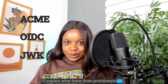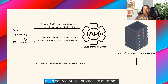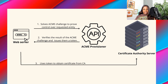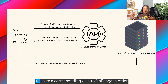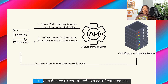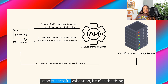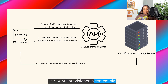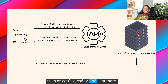I'll explain what these three provisioners do. The ACME provisioner uses the popular open source ACME protocol to automate certificate issuance from a Small Step Certificate Authority to web endpoints or devices. It contacts ACME clients and asks them to solve a corresponding ACME challenge in order to prove control or ownership over an IP address, a URL, or a device ID contained in a certificate request. Upon successful validation, it grants the client access to receive certificates from a Small Step Certificate Authority. Our ACME provisioner is compatible with all major ACME clients, such as Certbot, Caddy, and many more.